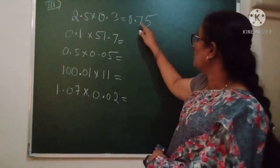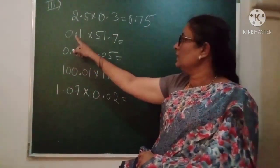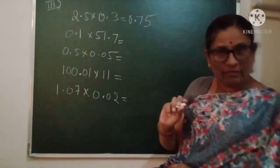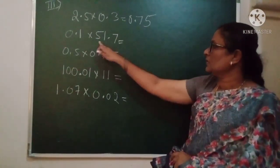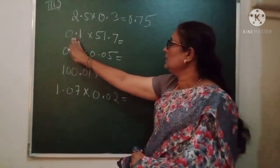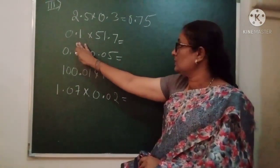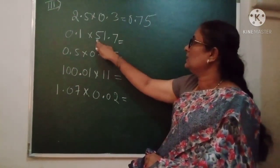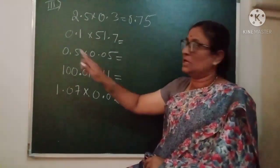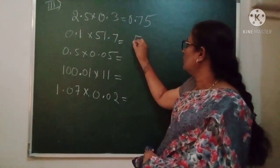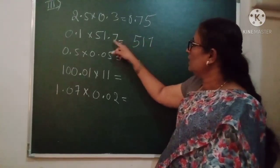Now look at this one: 0.1 × 51.7. Here it is very simple. I am taking 0.1 as 1 for multiplication purpose, and 51.7 I am considering as 517. So 1 × 517 is 517 only.